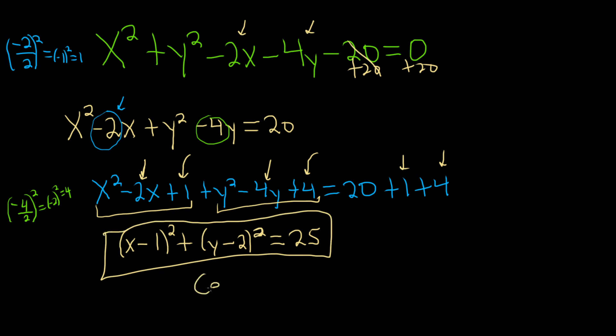To find the center of this circle, all you have to do is switch the signs. So it's negative, so it becomes positive. It's negative, so it becomes positive. Just switch it. Switch it. Switch the signs. And the radius, all you do is take the square root of this number here. So the square root of 25 is equal to 5. Boom. All right.